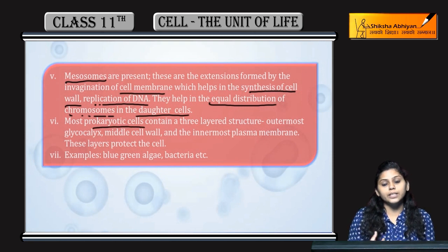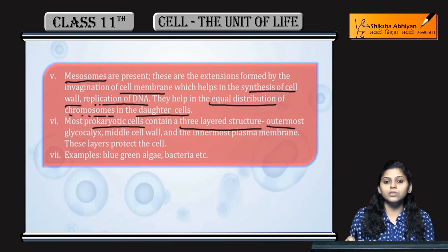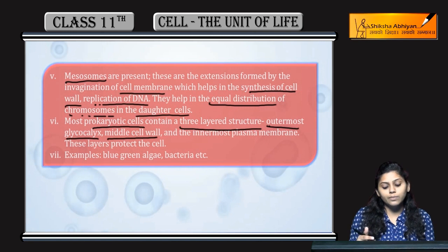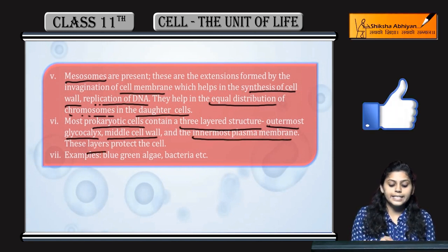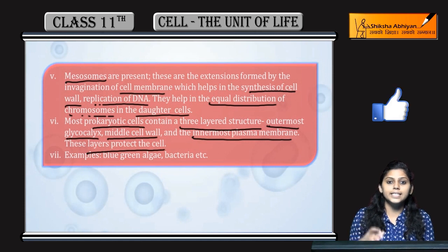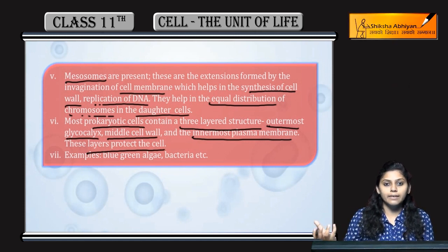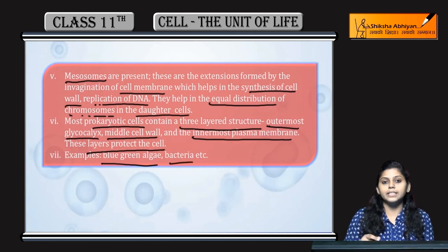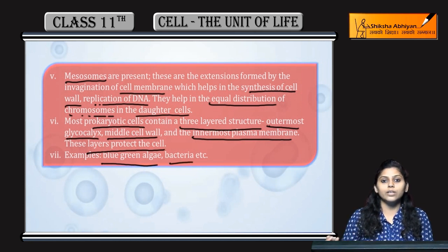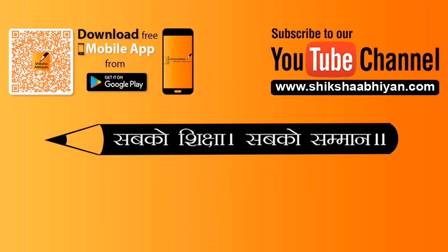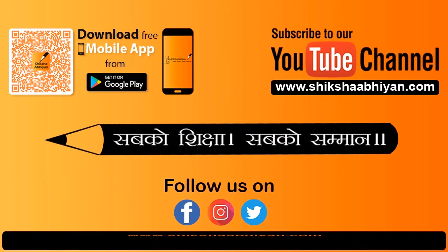Mostly prokaryotic cells mein teen layered structure hota hai: outermost glycocalyx, middle cell wall, aur innermost plasma membrane. Ye layers cell ko outer environment se protect karti hain. Examples hain blue-green algae aur bacteria.